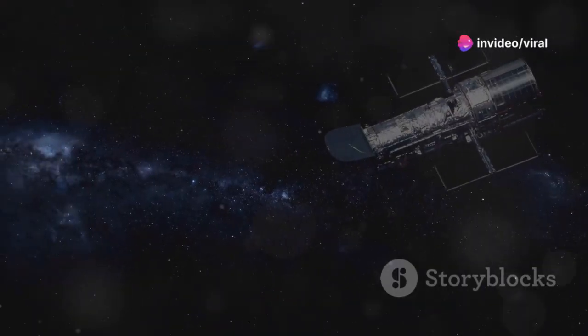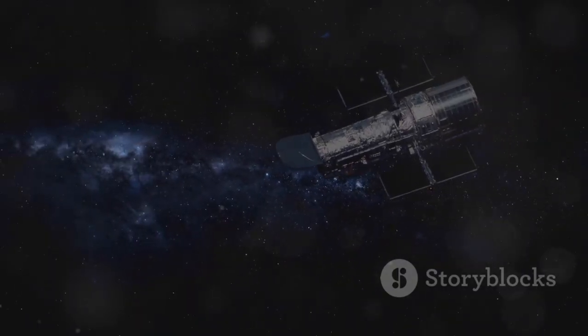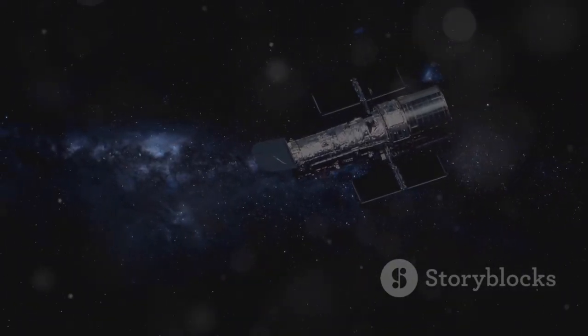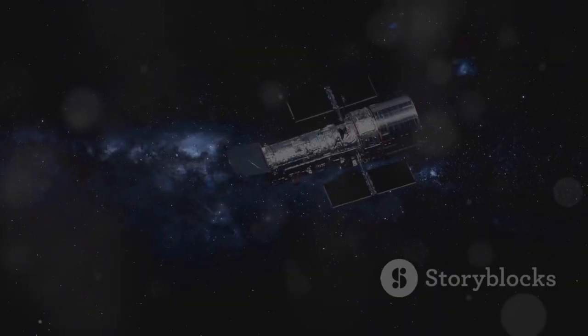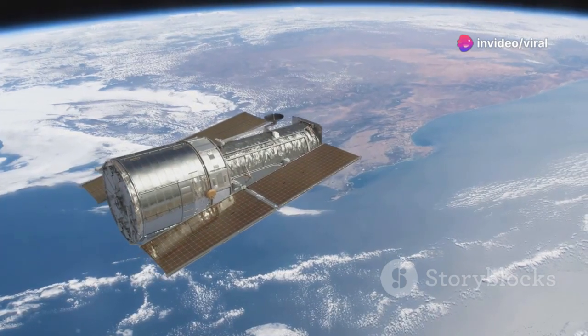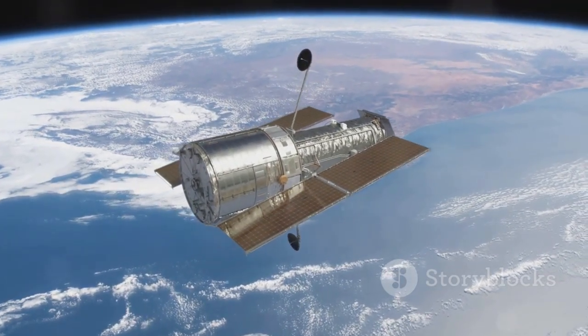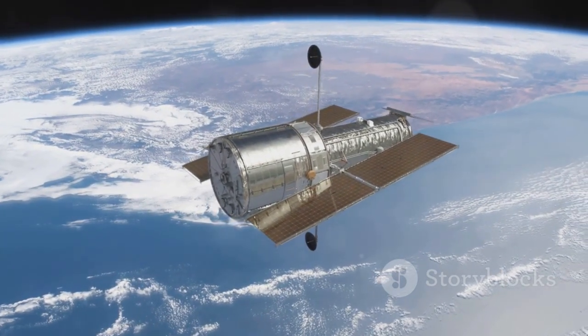Imagine a butterfly emerging from its chrysalis, except this one was the size of a tennis court, with a mirror made of 18 gold-coated segments, each moving into place with breathtaking accuracy. Its sunshield, as large as a tennis court, unfolded to protect the sensitive instruments from the sun's heat.